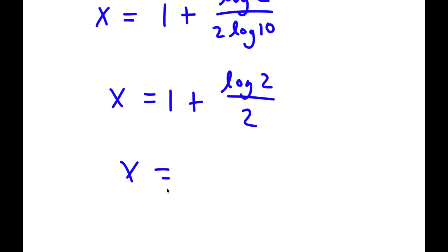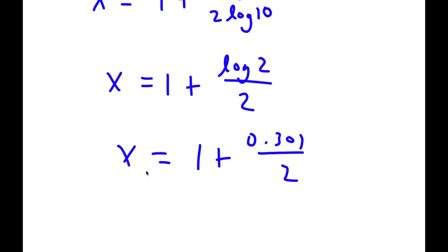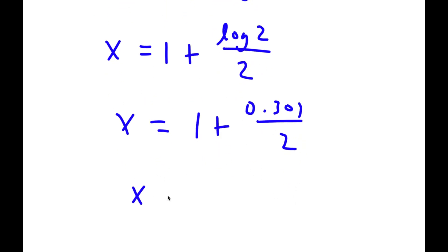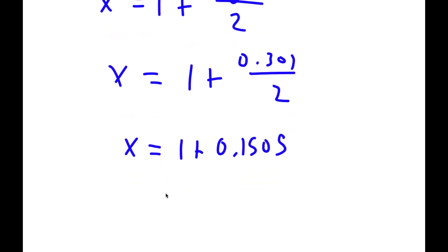So now I have x is equal to 1 plus log 2 over 2 times 1, which is 2. And log 2 is equal to 0.301, so I have 0.301 over 2. And this is equal to 1 plus 0.1505, which is 1.1505.